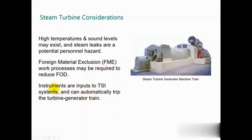In the steam turbine, all the instruments — especially in the big ones — are called the TSI, Turbine Supervisory Instrumentation. That includes vibration, differential expansion, eccentricity, shell expansion, truss position, rotor position, and temperatures. This is all part of the TSI.